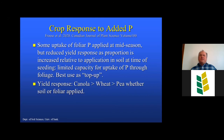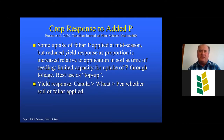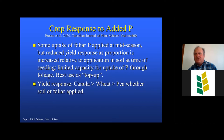Foliar phosphorus applications can be effectively used as a top-up, but aren't a substitute for having phosphorus placed in the soil at seeding for early access. We saw some uptake from foliar applied phosphorus mid-season, but reduced yield response as the foliar proportion increased. Canola tended to respond greatest to phosphorus application, followed by wheat; peas showed little response, probably reflecting their ability to scavenge indigenous phosphorus in the soil.